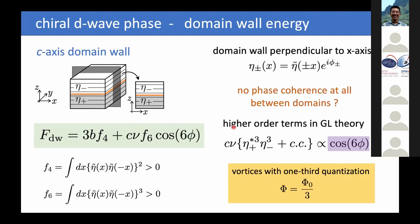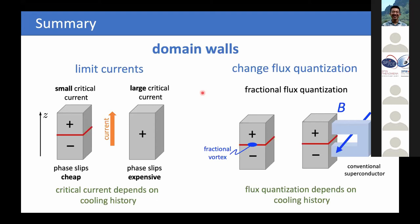Along the C-axis, the standard Ginzburg-Landau terms give no phi dependence for the domain wall energy; one must go to a sixth-order term. The only such term gives a cos(6φ) dependence, proportional to nu. So there is no coupling along the C-axis between chiral domains for analogous reasons when there is cylindrical symmetry. With anisotropy, a cos(6φ) dependence appears, which actually allows for one-third quantized vortices — a situation analogous to that for the chiral P-wave state.